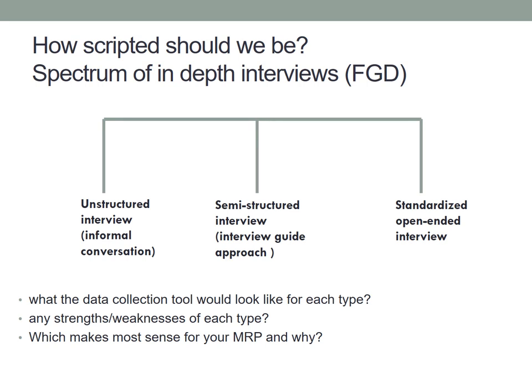I tend to write it out where it's like: here is the domain I'm interested in — physical risks, psychological harms, whatever — here is my question, and then here are some of the probes that might be relevant. That physically tries to keep me on track. There should be some standardization — asking people similar enough questions in content so you're able to reach thematic saturation. If you're asking every single person a completely different set of questions, you're just getting one-off answers.